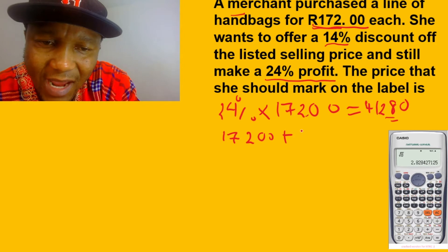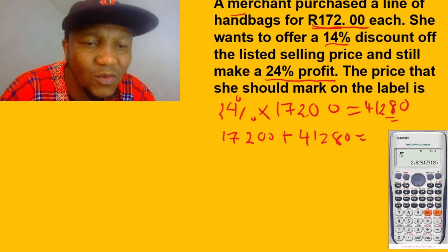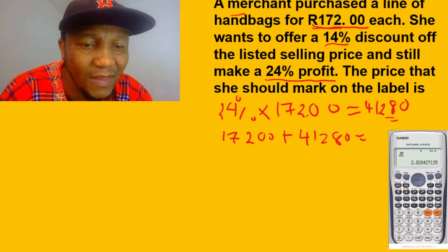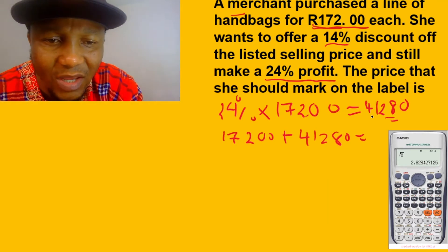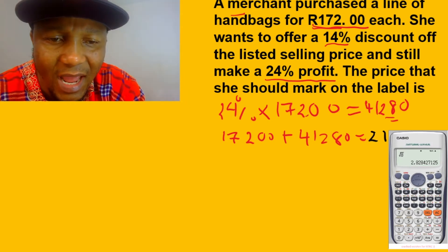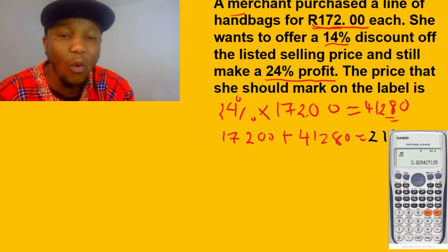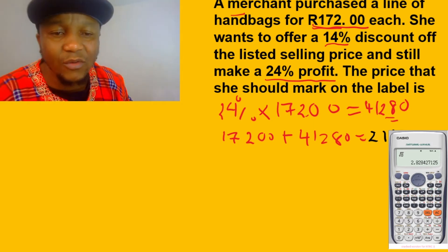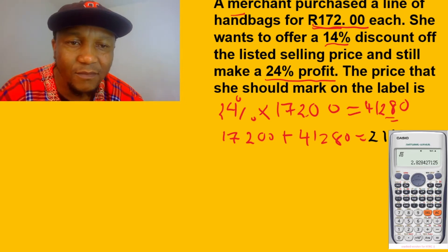Adding them together gives us 213.28. So 213.28 is going to be our selling price.